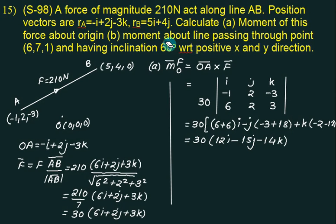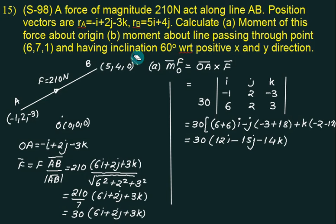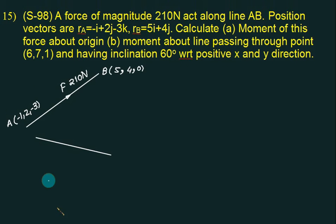Now we have to find the moment of the same force about a line passing through the point 6, 7, 1 and having inclination of 60 degrees with respect to the positive x-axis and y-direction. So theta x equals 60 and theta y equals 60. The coordinate of point C is 6, 7, 1.